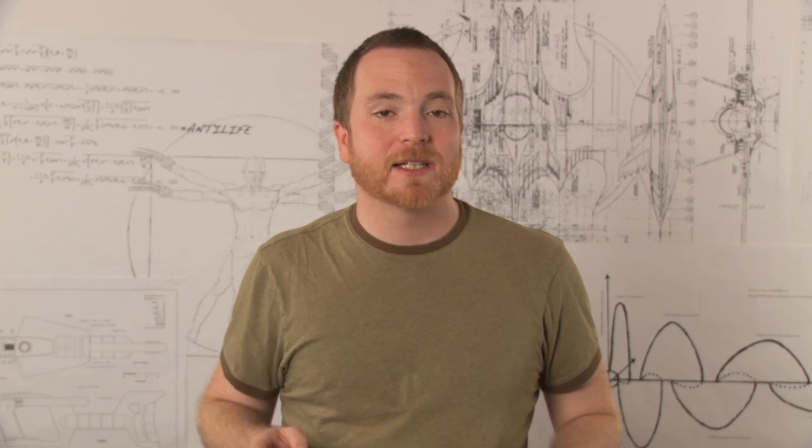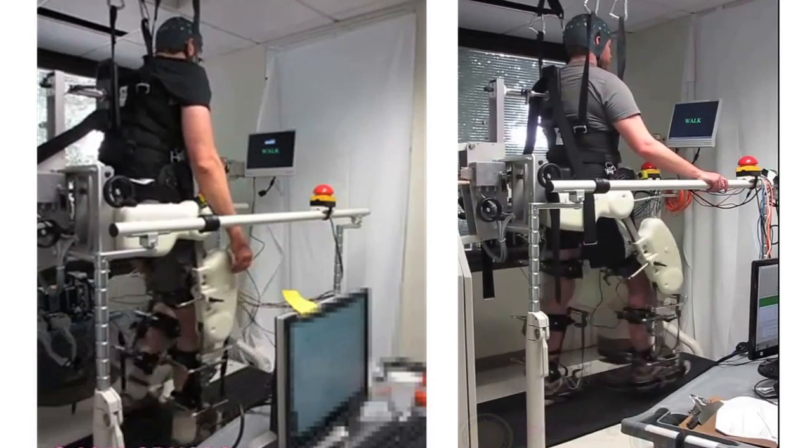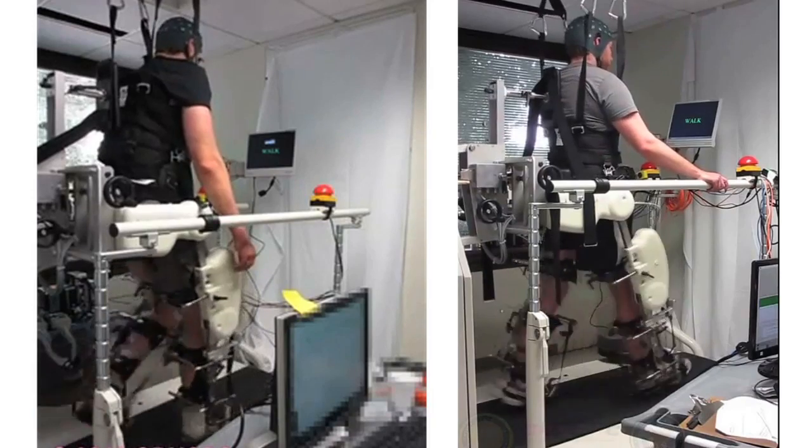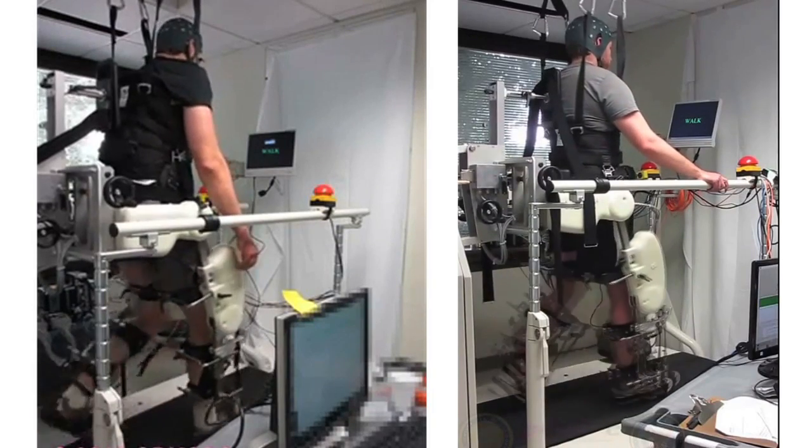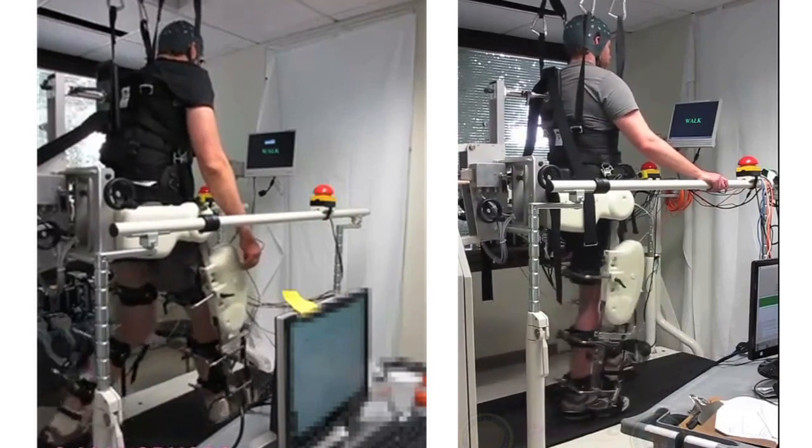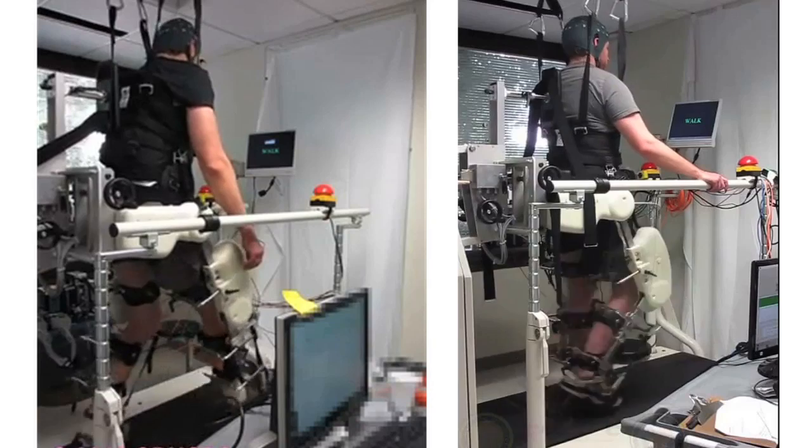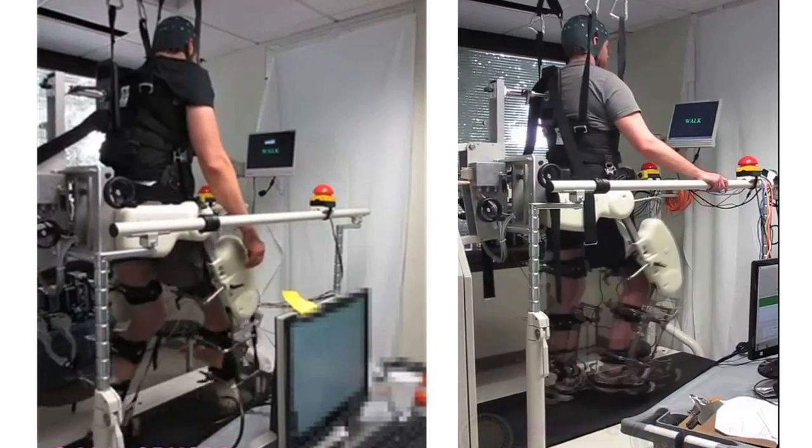And UC Irvine, together with the VA, have developed a pair of robotic legs that can be controlled by an EEG headset. The video on the left is of a man using the device in 2012. The video on the right is of a man using the legs in 2013. They may seem very similar. The difference is, the man on the left is an able-bodied individual, while the man on the right is a paraplegic.